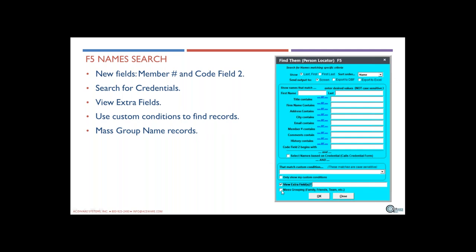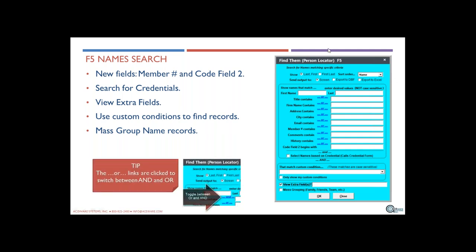You also have the ability to view extra fields and use a custom condition to find records. One of the other new things in F5 — and this is a Britney special, one of your ACEware aces — is the ability to mass group family. If you haven't done family grouping for proxy registration, that will be the focus of next month's webinar on the new proxy reg capability in the new ACEweb.